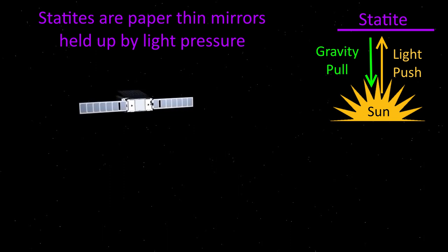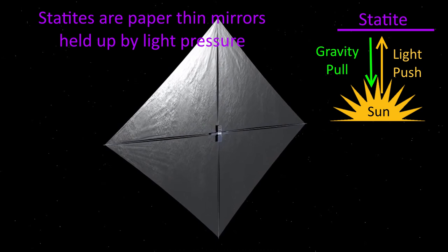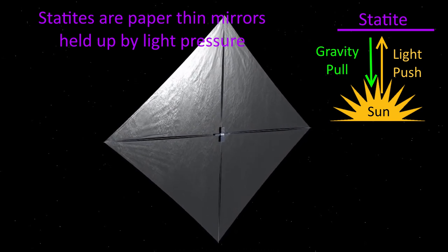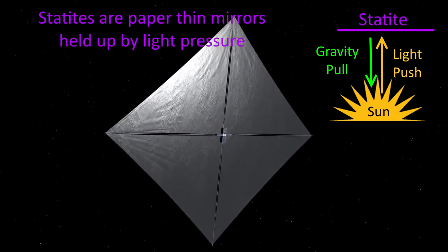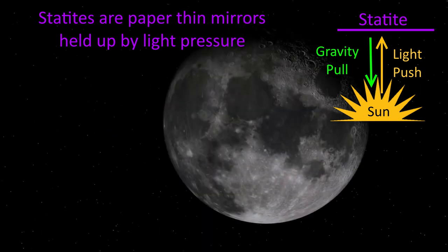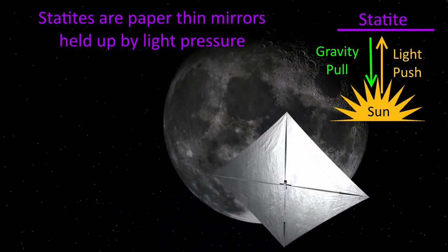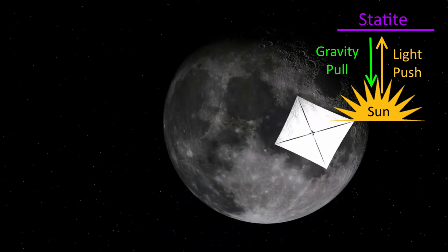A statite, which is short for Static Satellite, is a type of simple active support structure. It is a very thin object light enough to float over the Sun. It is pushed away by solar radiation equal but opposite to the pull of gravity, essentially like floating a sheet of paper over an air vent, or a heavy version of a solar sail.